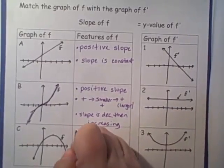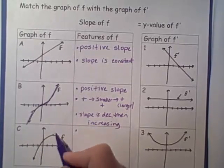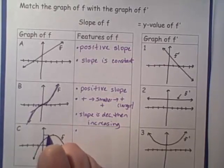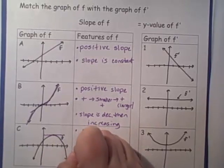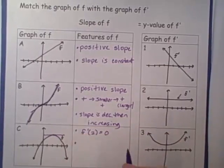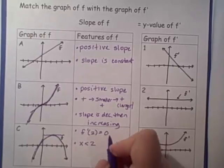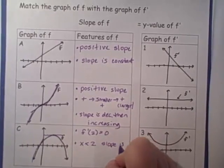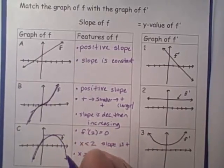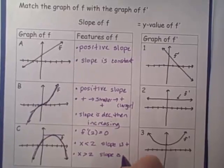Let's look at graph C. The function is increasing on the left and decreasing on the right. Right at about x equals 2, we have a zero slope, so f prime at 2 is 0. For x less than 2, the slope is positive, and for x greater than 2, the function is decreasing, so the slopes of the tangent lines are negative.